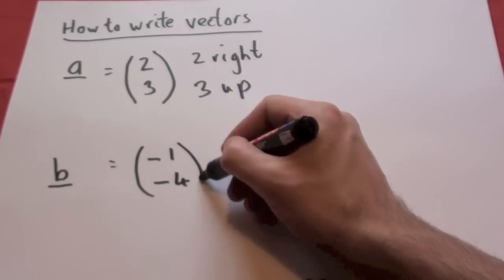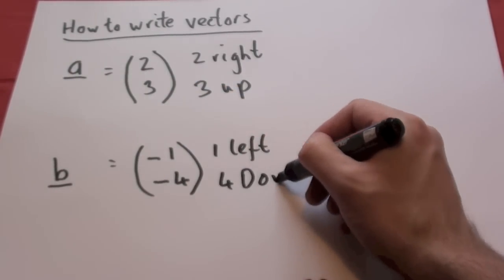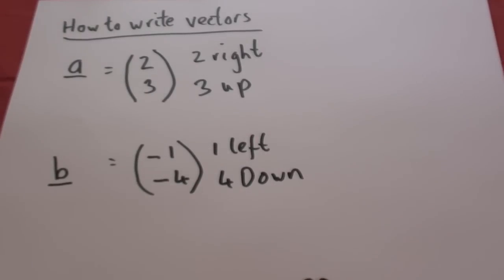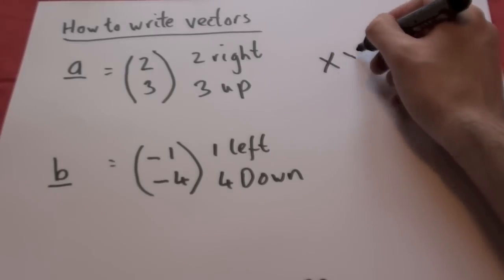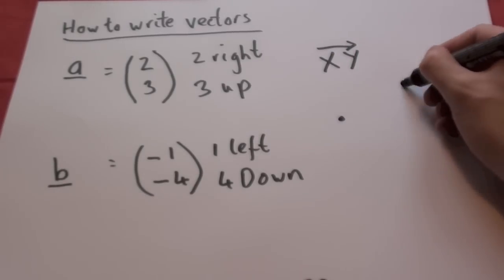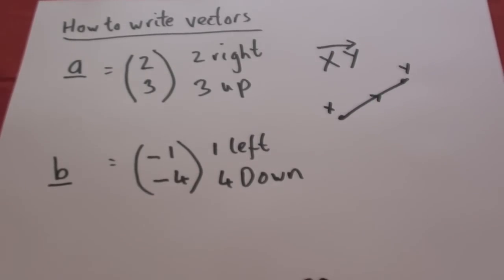Vector B is minus 1, minus 4. That means 1 left and 4 down. You often see them written like X, Y with an arrow above it. This means from the point X to point Y.